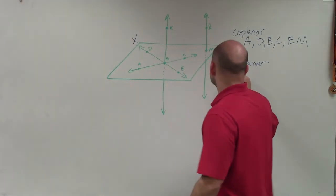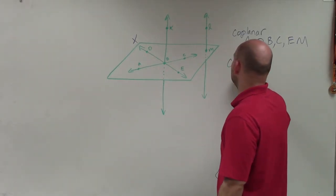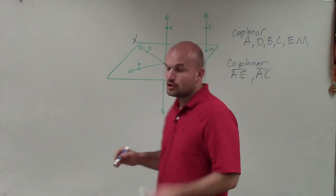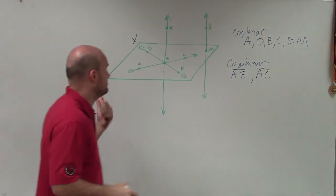So two coplanar lines, I could say, would be AE and AC. Those would be two lines are coplanar because they lie on the same plane.